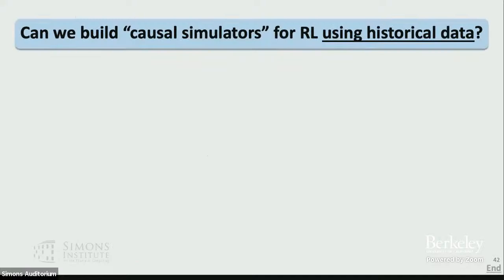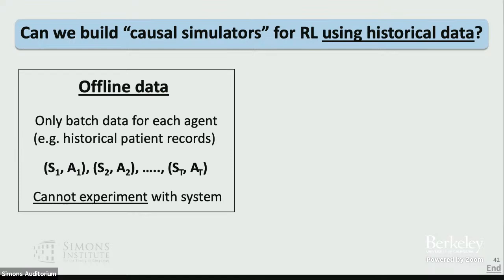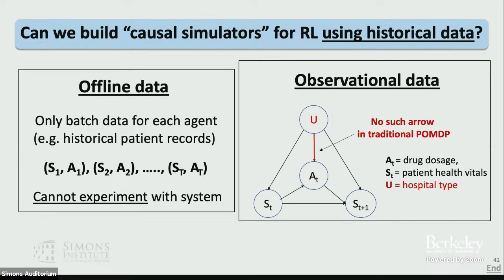The question is: can we build causal simulators for RL using historical data, where you have offline observational data — state-action-reward trajectories per patient — and can't experiment with your system? In a POMDP, the state transition can be a function of a latent factor you don't observe, but your action is a function of the observed state. What makes causal RL harder is when the action itself is influenced by a latent confounder — this goes beyond a standard POMDP.